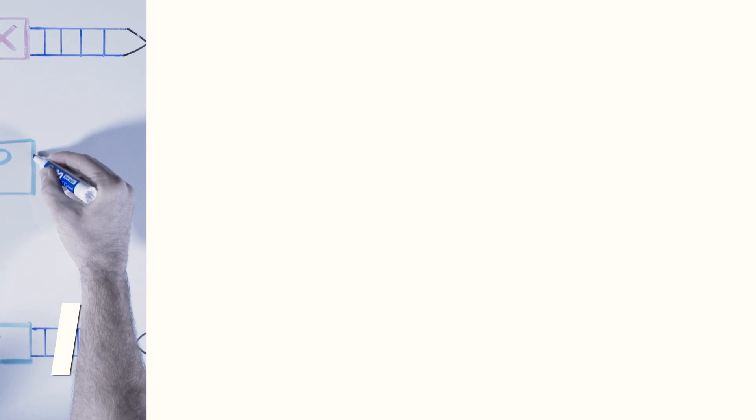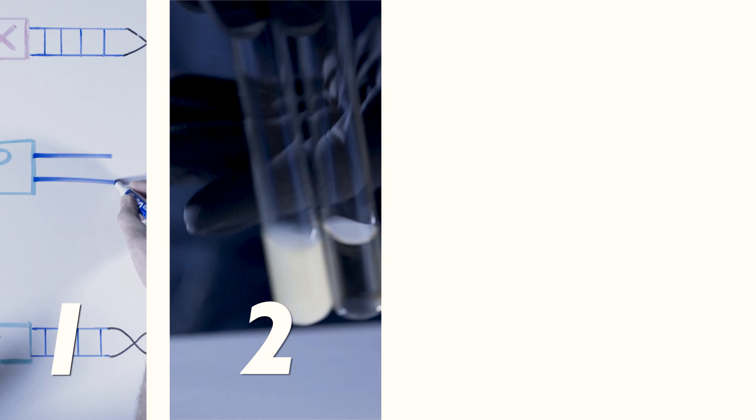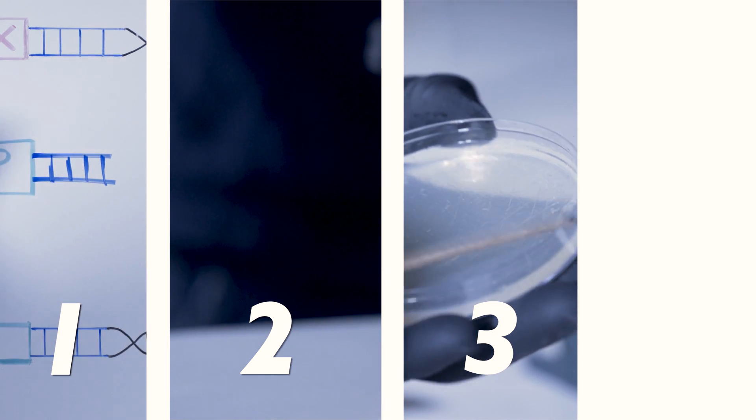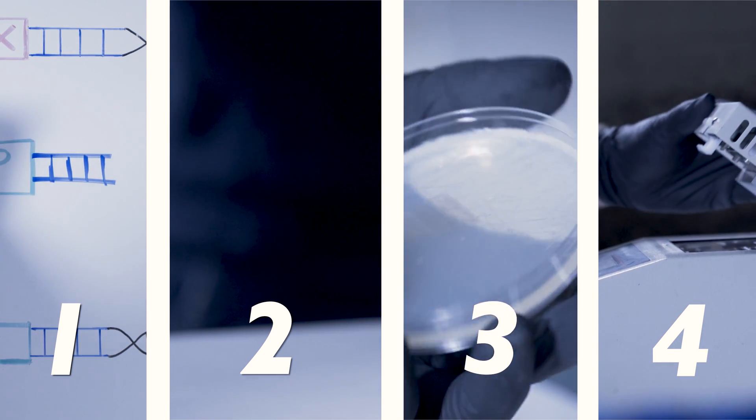We'll break it down into four steps. First, we'll design our genetic strategy and order our new DNA. Second, we'll prep our bacteria and add the new DNA. Third, we'll isolate and modify the bacteria. And finally, we'll check to make sure our final strain works.